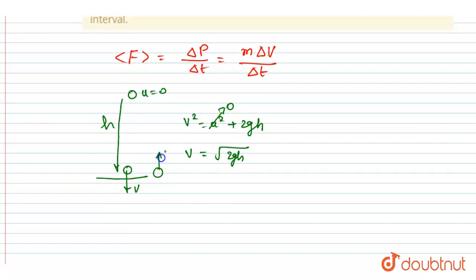After it bounces back it will have the same velocity in upward direction. So I will write the change in velocity. Let's suppose I took the upward direction as positive.